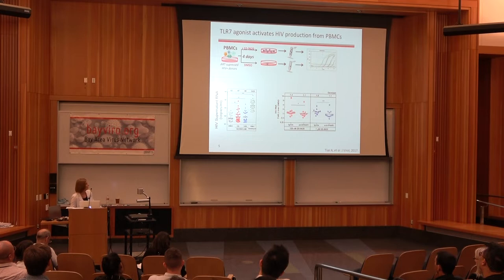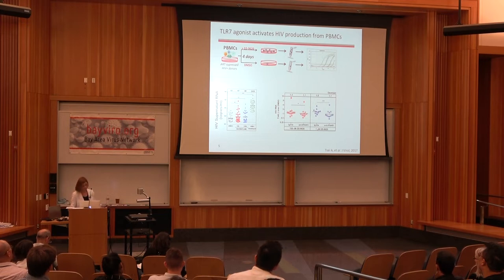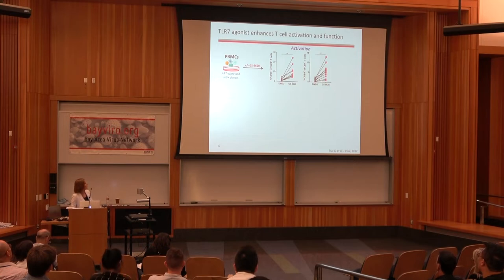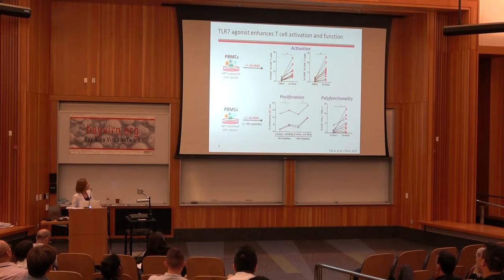We know that this activity is at least in part dependent on type 1 interferon production, because when we use an interferon blocking antibody, we ablate this particular response. TLR7 agonists can also enhance immune activation and function — shown here is flow cytometry data showing that treatment of PBMCs from ART-suppressed HIV-positive donors results in upregulation of CD69 on the surface of both CD4 and CD8 cells, signaling their activation. It can also induce T cell proliferation as well as polyfunctionality, assessed by looking at interferon gamma and TNF-alpha production by CD8 T cells.